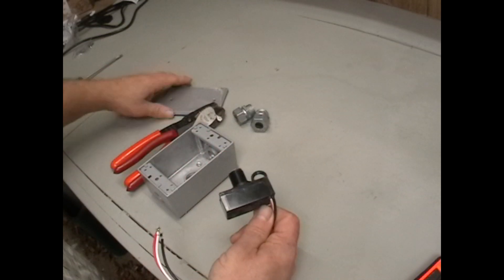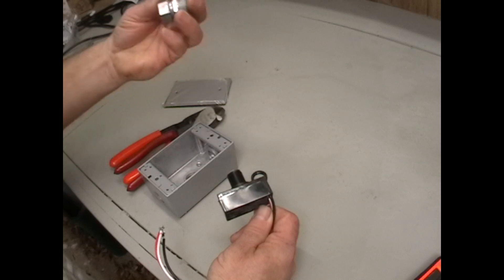What I've got here is a box, a photocell, the cover for the box, and ends for our extension cord.